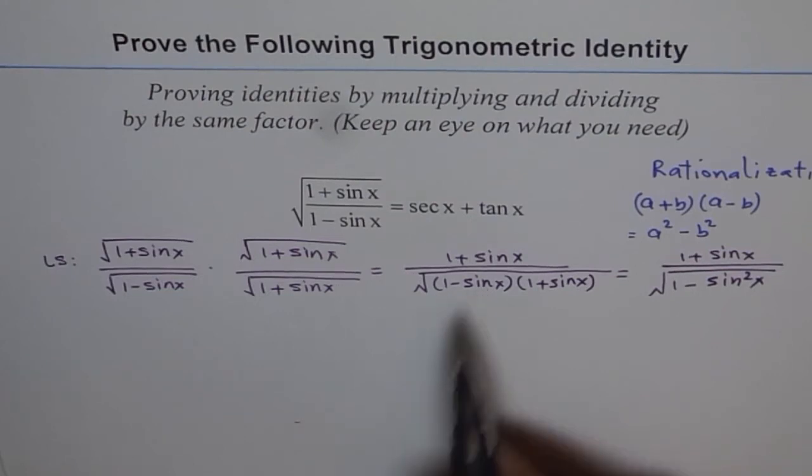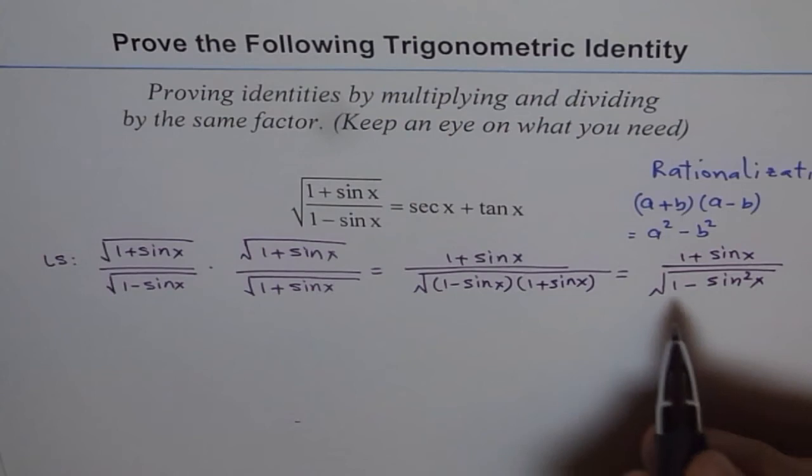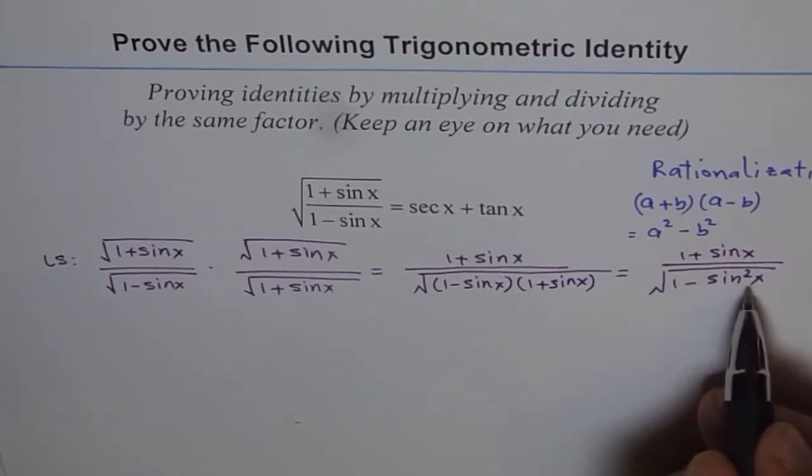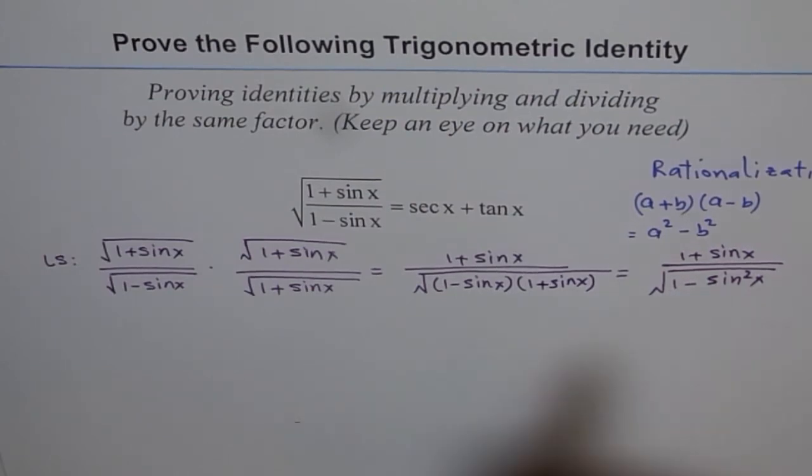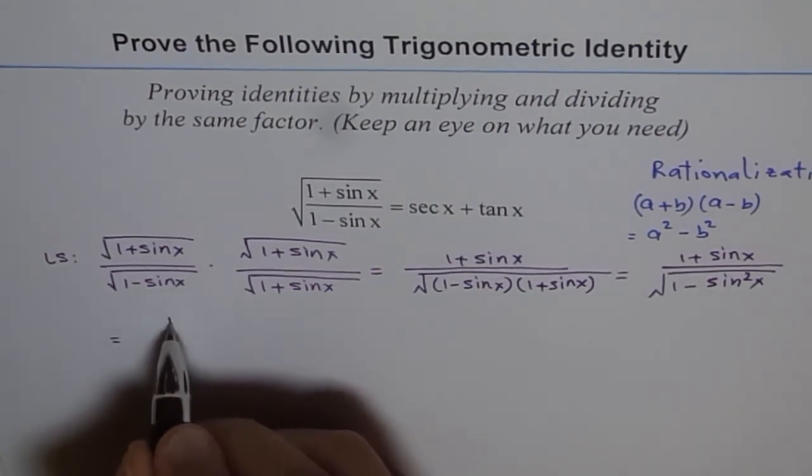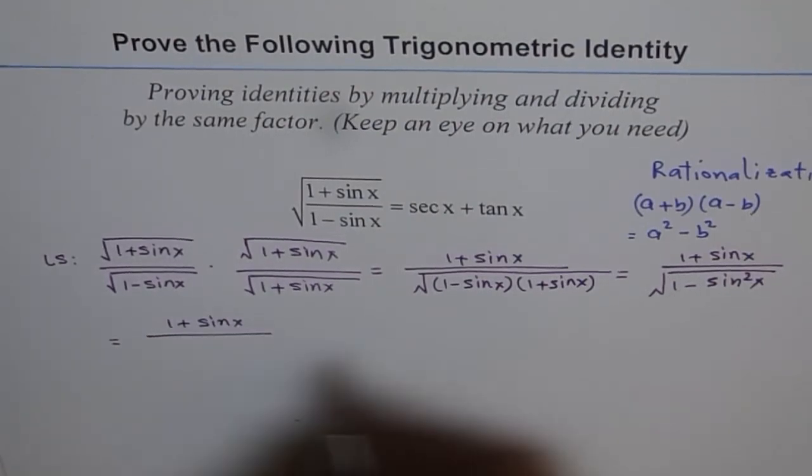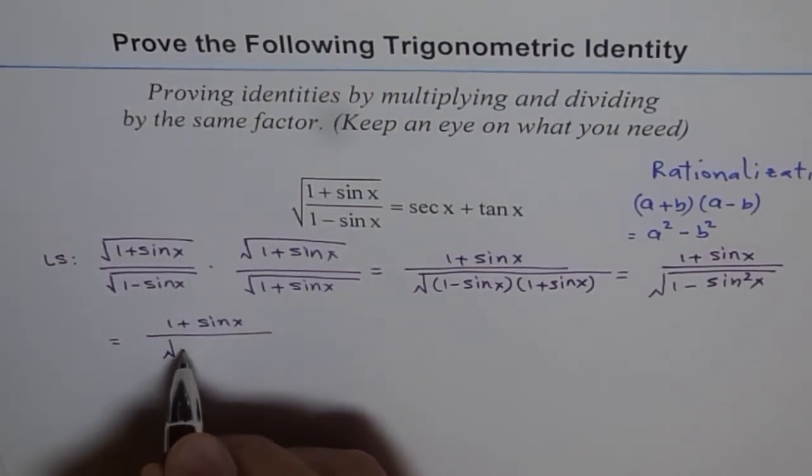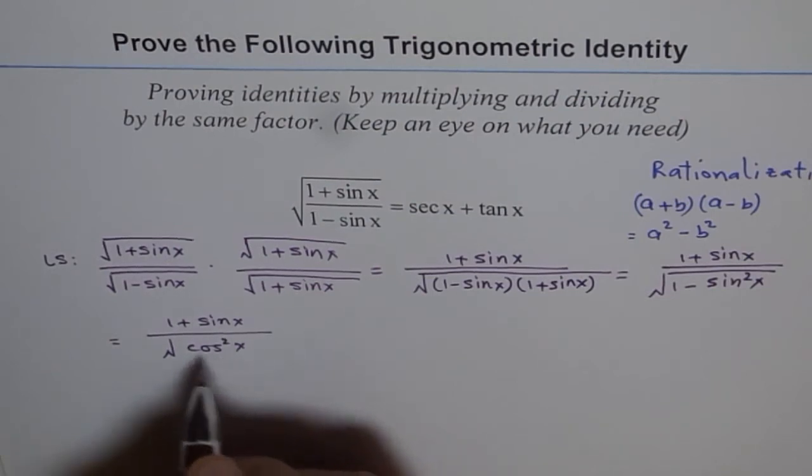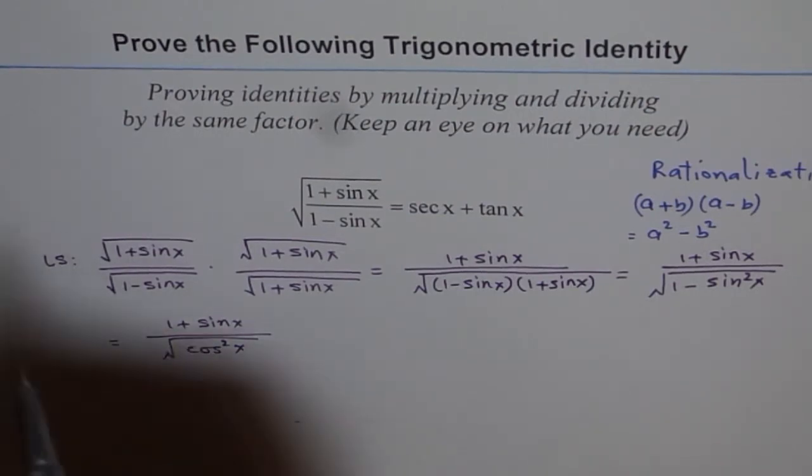A square minus b square. And as you know, what is 1 minus sin square x? It is cos square x. So we could write this as equal to 1 plus sin x divided by square root of cos square x. How did we get that? We got it from utilizing our Pythagorean identity.